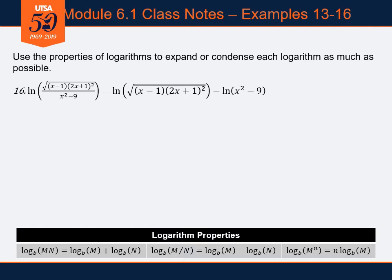Splitting it up into a difference of two separate logarithms: the natural log of everything in the numerator, minus the natural log of the denominator x squared minus nine. In the first logarithm I see a radical — everything's trapped under a square root. The square root is the same as a one-half power, so I bring that out: one half times the natural log of x minus one times two x plus one squared.